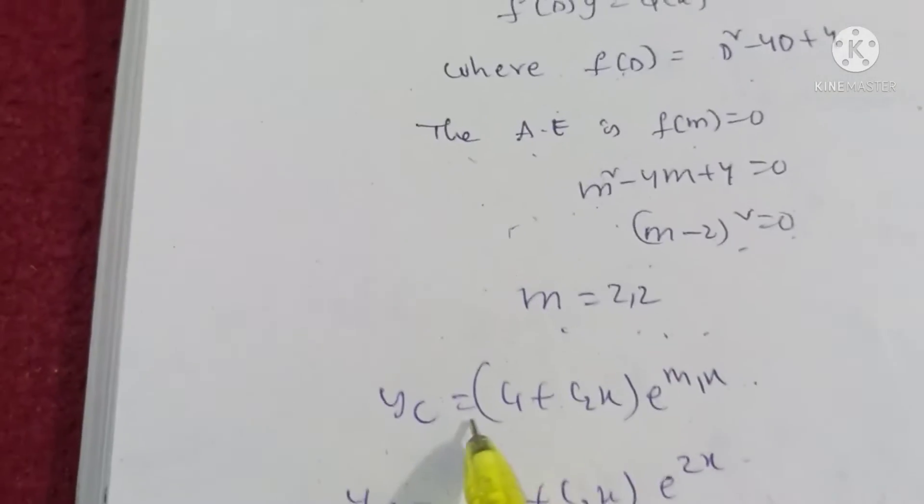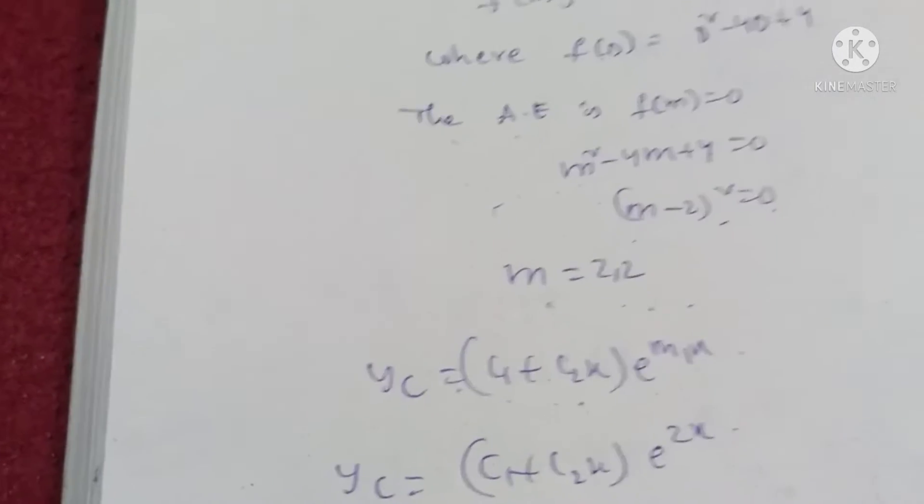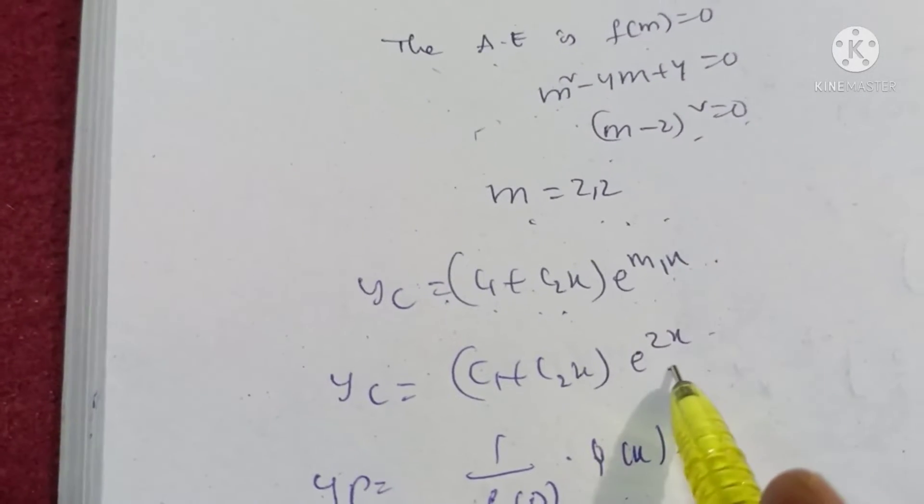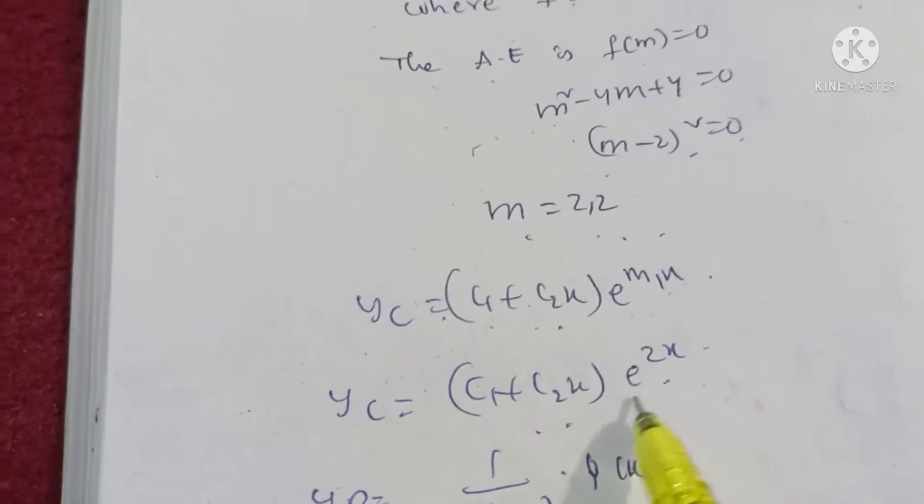Same roots formula. y_c is equal to c1 plus c2 x into e power m1x. m1 value is 2. Therefore, c1 plus c2x into e power 2x.